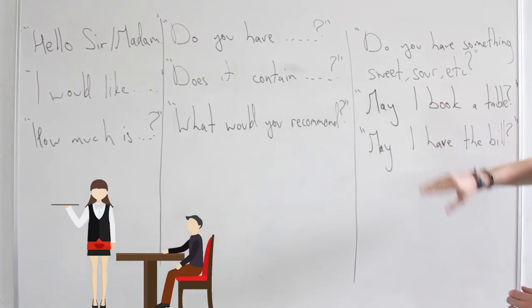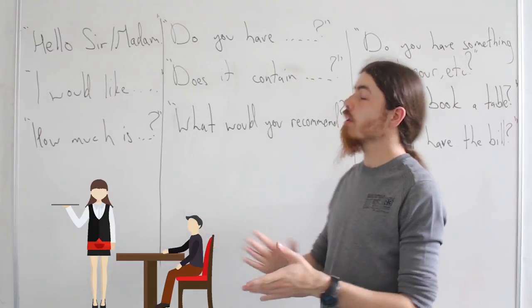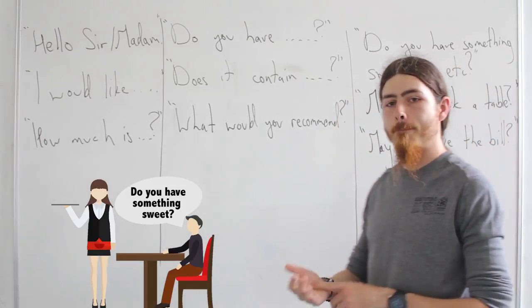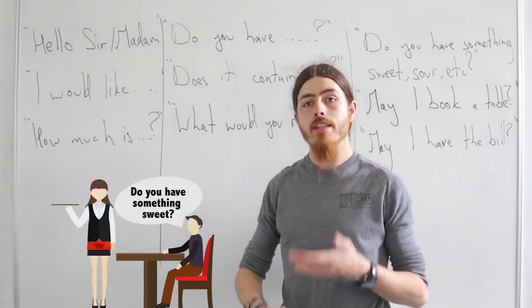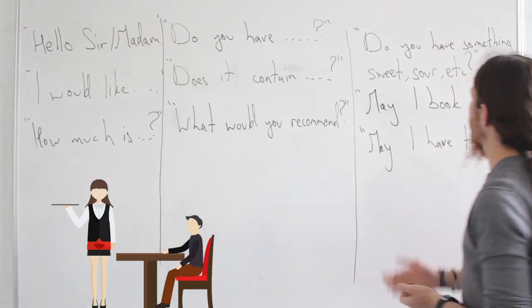And again, if you want to be more specific—whatever about does it have meat, fish, chicken—you can say do you have something sweet, something sour, bitter, or savory? The different types of flavors that exist in the English language.